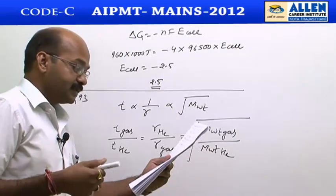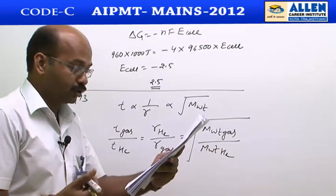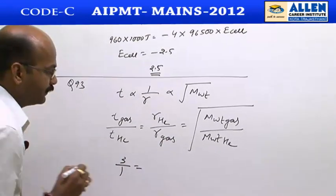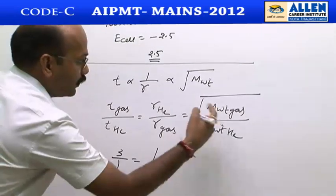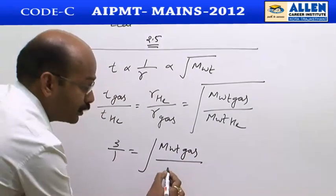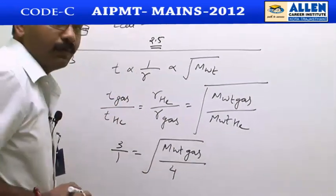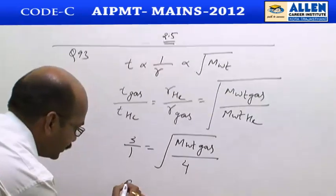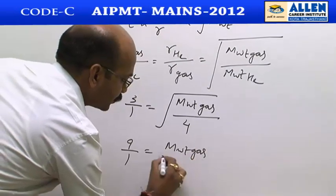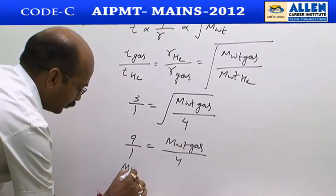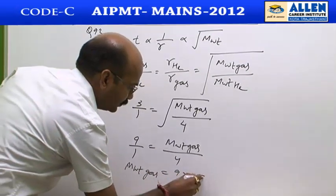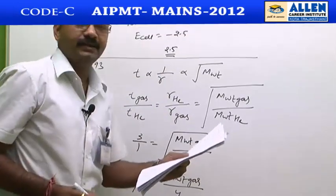The question says the gas takes 3 times as long to diffuse as helium, so 3/1 equals the square root of molecular weight of gas divided by 4. Squaring both sides gives 9/1 equals molecular weight of gas divided by 4. Therefore, the molecular weight of gas equals 9 × 4 = 36. So the answer is option 4.